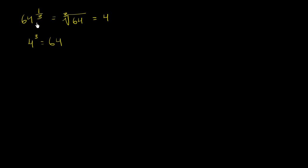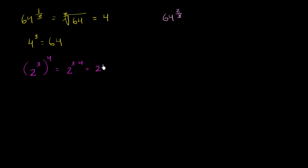Now we're going to think about slightly more complex fractional exponents. The ones we've seen so far have a 1 in the numerator. Now we're going to see something different — what 64 to the 2/3 power is. I'm going to use a property of exponents: if I raise something to the 3rd power and then raise that to the 4th power, this is the same thing as raising it to the 3 times 4, or 12th power.